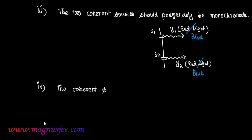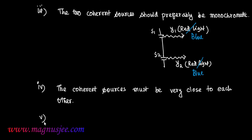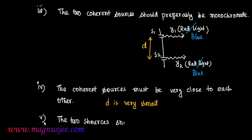Number four condition: the coherent sources must be very close to each other. The slit separation D — that is, the distance between the two coherent sources S1 and S2 — must be very small.